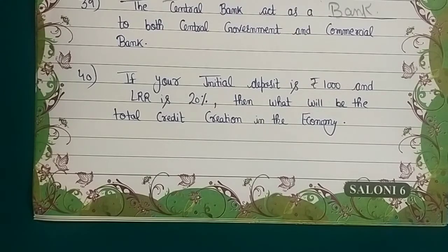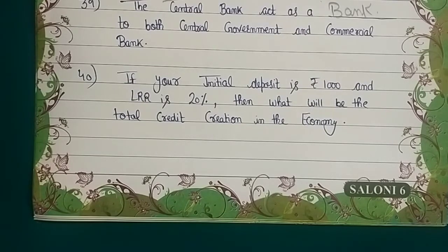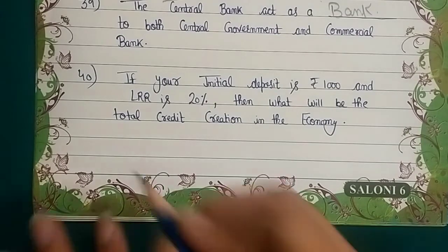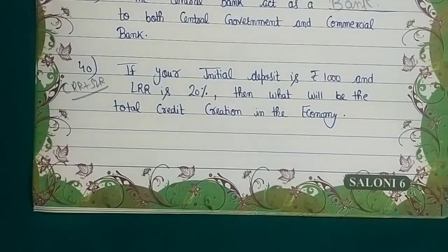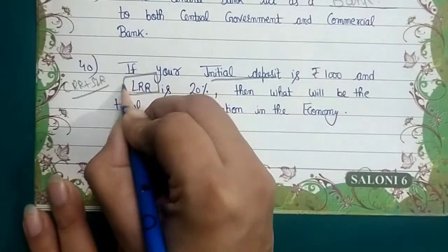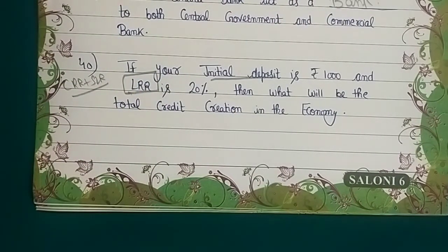Question 40 involves the credit creation process. Initial deposit is ₹1,000 and the bank's LRR — which is CRR plus SLR — what will total credit creation be? This is a credit creation question. In one-mark questions, you might be asked what the credit creation process depends on — it depends on initial deposit and LRR. LRR is the sum of CRR plus SLR. The examiner may try to confuse you: total deposit that both central bank and commercial bank hold is LRR; what only commercial banks keep with themselves is SLR; what commercial banks keep with RBI is CRR. The total of both is your LRR.